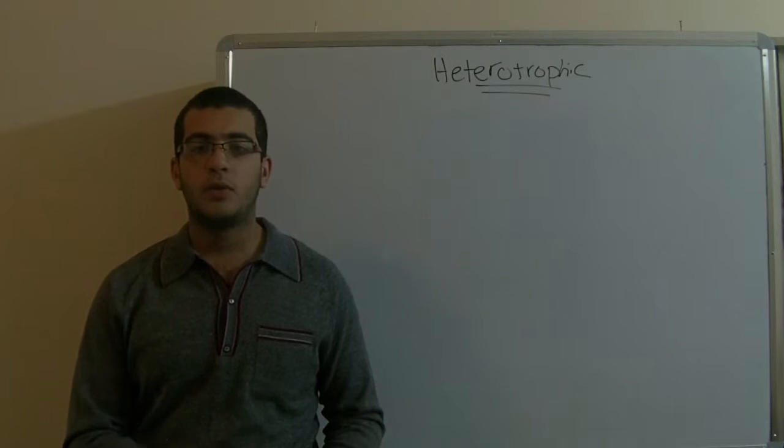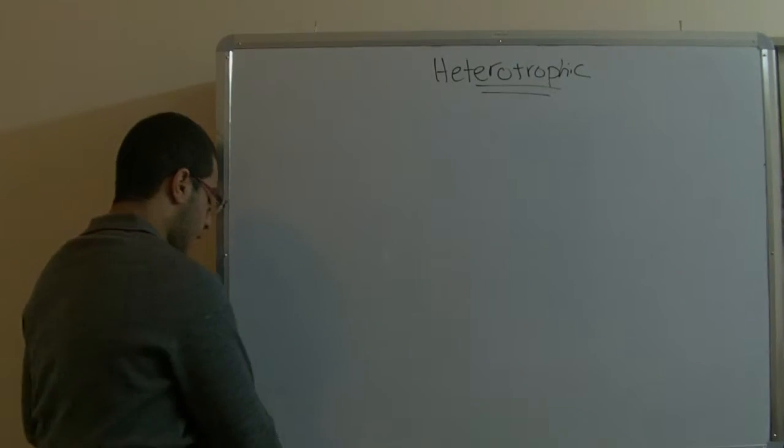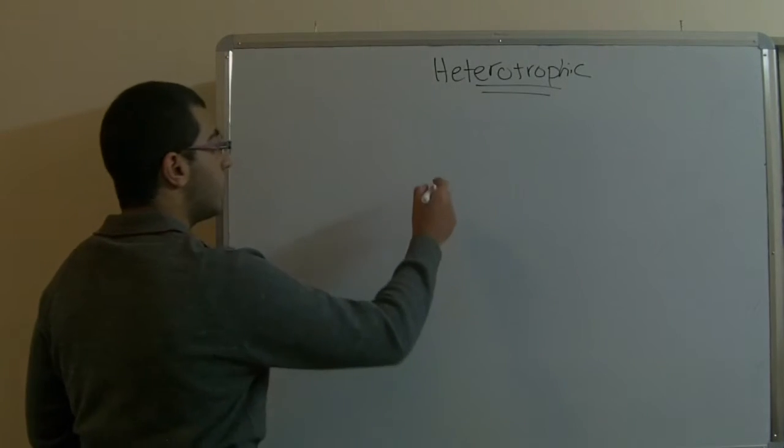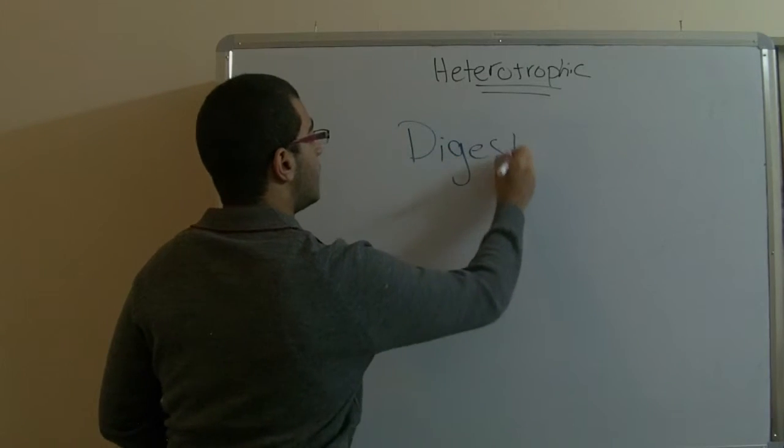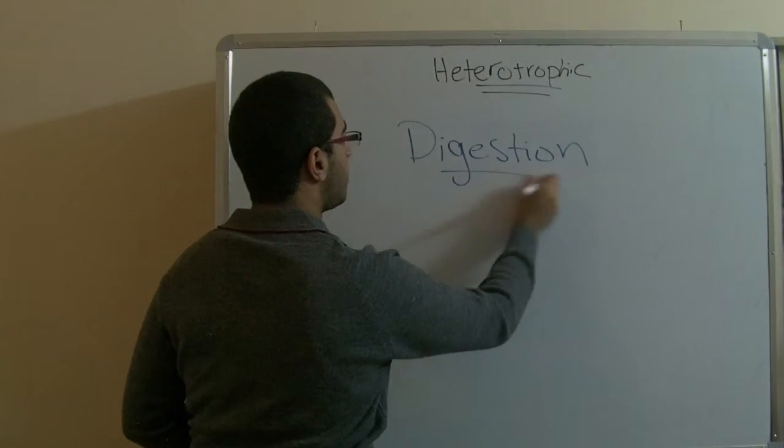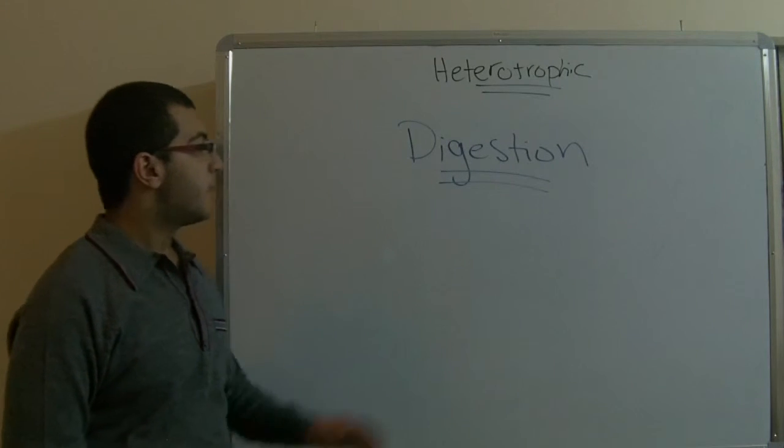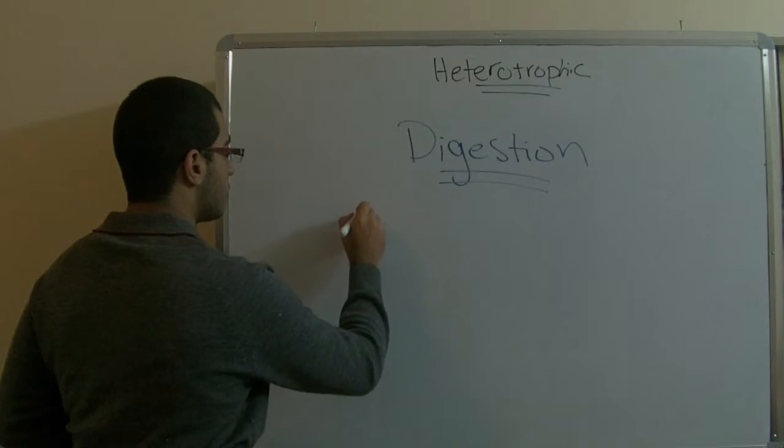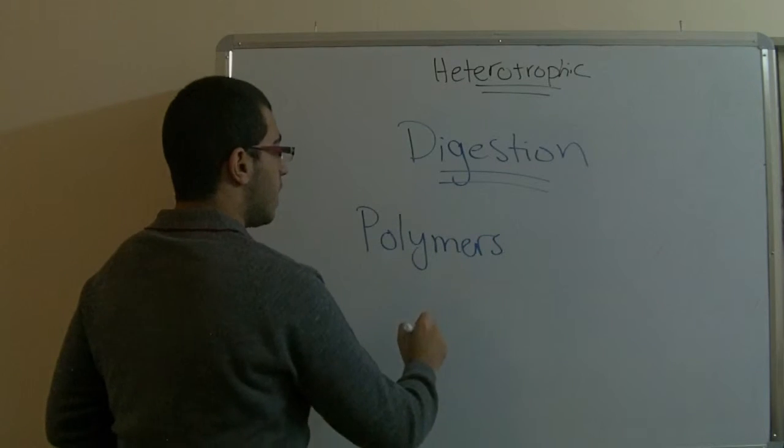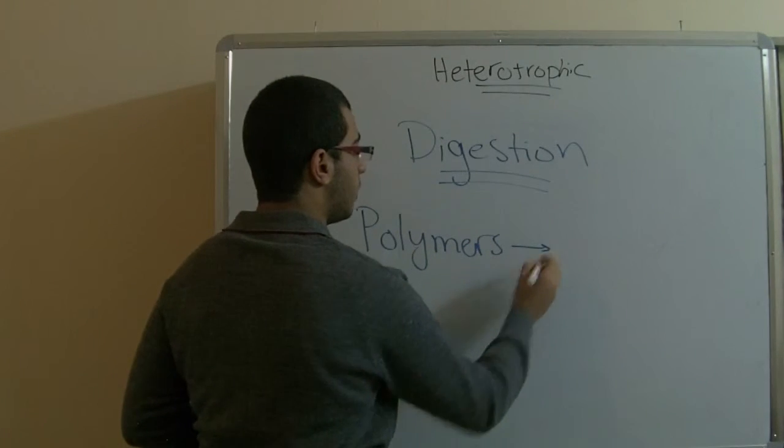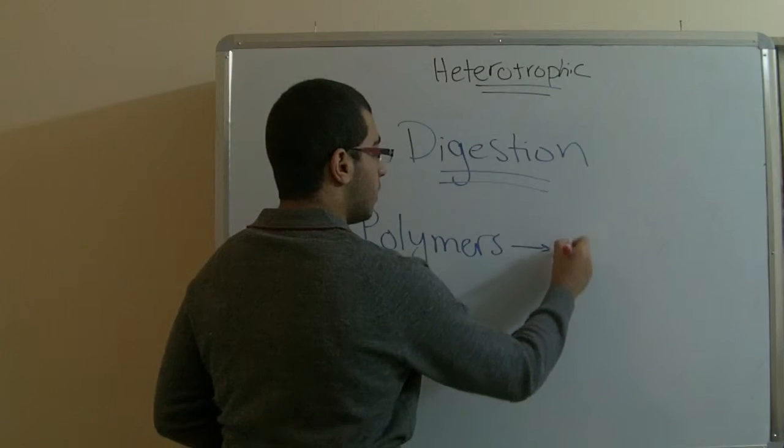These can be easily absorbed through the cell membranes either by diffusion or active transport. This process of breaking down large molecules into smaller ones is called digestion. The definition of digestion is the process in which large molecules called polymers are broken down into smaller molecules called monomers.